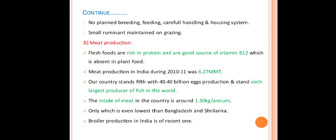Because of lack of knowledge, farmers cannot provide breeding, feeding, careful handling and housing system to the animals. More emphasis is maintained on grazing. Regarding meat production — fresh foods rich in protein and a good source of vitamin B12, which is absent in plant food, hence meat provides vitamin B12. Meat production in India during 2010-11 was 6.27 million metric tons, with 40.4 billion eggs production, and India is the 6th largest producer of fish in the world.